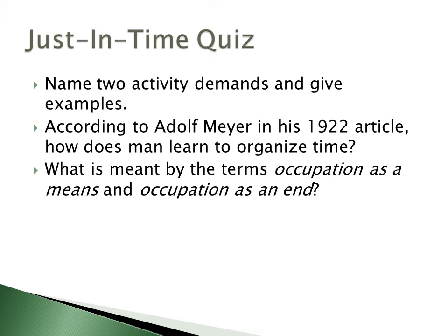The second question: according to Adolf Meyer in his 1922 article, how does man learn to organize time? His simple response is that people learn to organize time by doing things. It is in doing these things that we organize our lives and break our life into chunks that we call time. It is actually a sociological construct that we measure time in the first place.